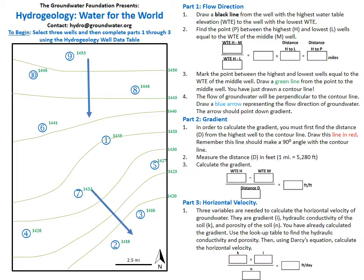From these contour lines, we now know the general flow of groundwater. Groundwater always moves from higher water table elevation to lower water table elevation. In the northern part of our scenario, the groundwater is generally moving towards the south, and then in the southern part it begins to curve off to the east. To determine the exact groundwater flow, we need to choose three wells — wells 1, 5, and 7, highlighted in red. Following the directions on the paper model, draw a black line from the well with the highest water table elevation, well 1 at 1,435 feet, to the well with the lowest water table elevation, well 5 at 1,427 feet.